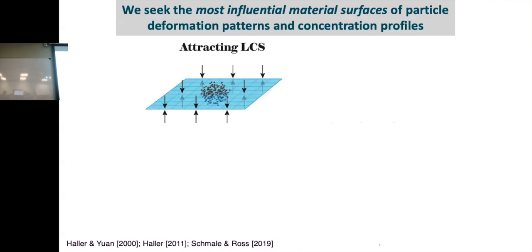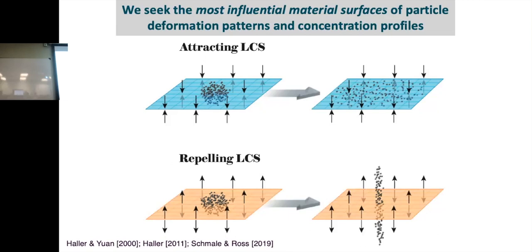If we're looking in a three-dimensional fluid, then these structures, they always have one dimension less. We call that co-dimension one. Attracting LCS would be a surface that seems to attract things if you go forward in time, seem to get squished along it. Repelling, same thing. But in 3D, things get stretched away.